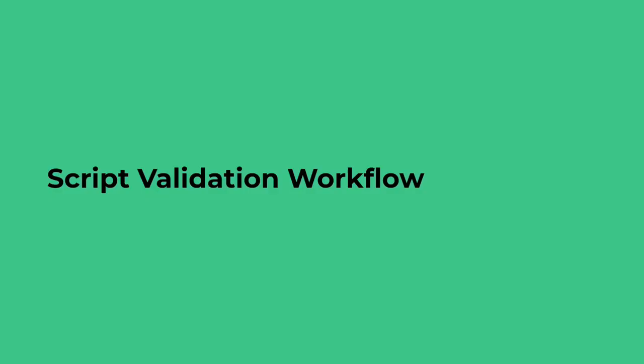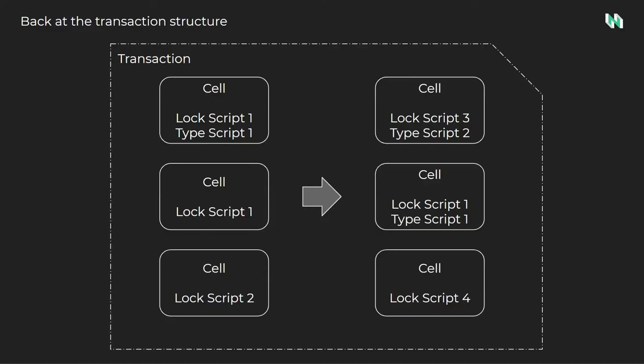First, we will cover the script validation workflow. This is the process that must be followed by a transaction to be committed to chain. This consists of the scripts which form a smart contract, as well as the protocols of Nervos CKB. Today we'll focus specifically on the scripts. This is an example of a transaction with six cells. Every cell has a lock script, and some cells have a TypeScript.